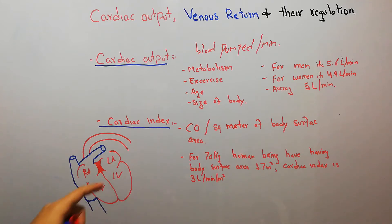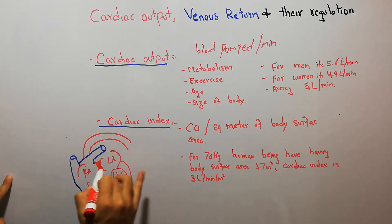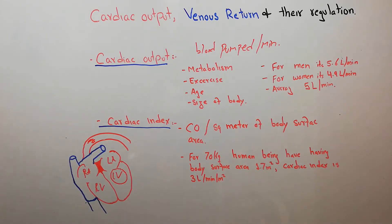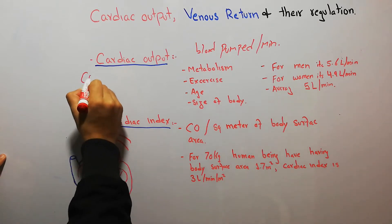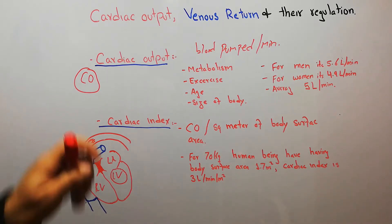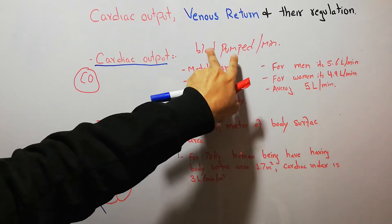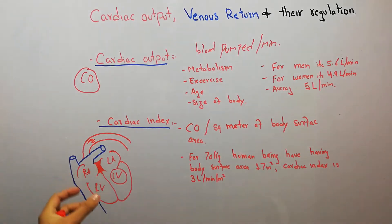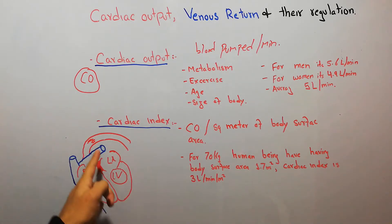The amount of blood that is pumped by the left ventricle into the aorta every minute is known as cardiac output. Note that the heart is also pumping blood into the lungs, but cardiac output specifically refers to the amount of blood pumped by the left ventricle into the aorta per minute.